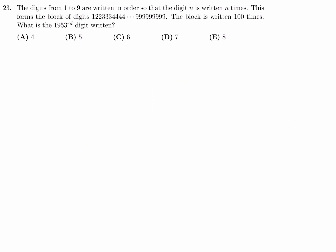The digits from 1 to 9 are written in order so that the digit n is written n times. This forms the block of digits 1, 2, 2, 3, 3, 3, 4, 4, 4, all the way up until you have these nines. The block is written 100 times. What is the 1953rd digit written?